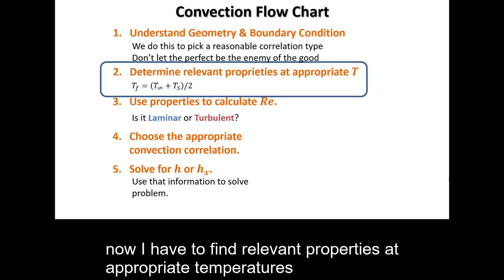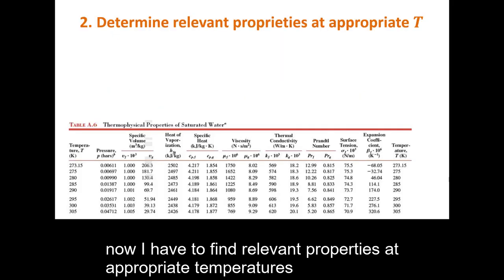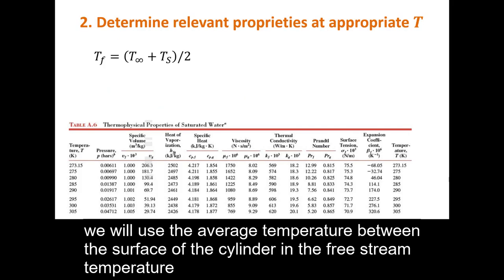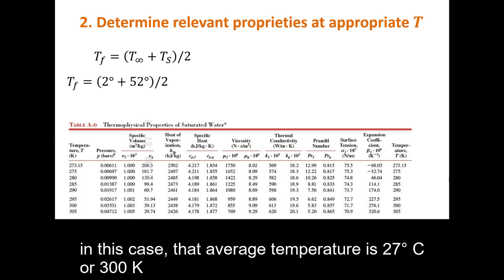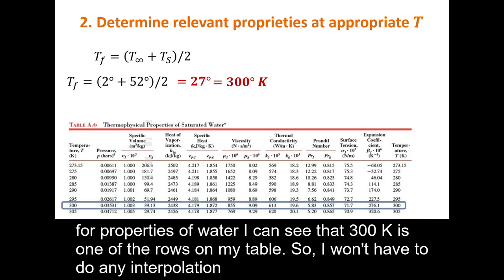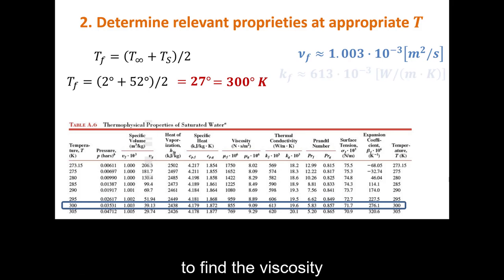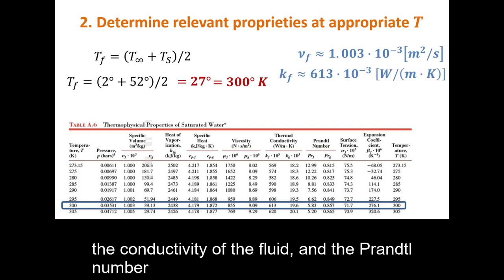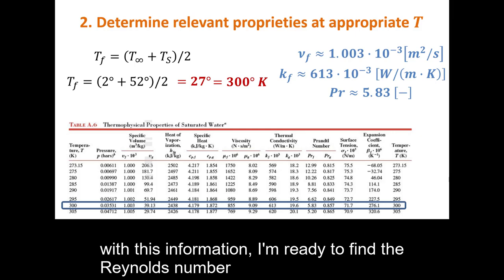Now I have to find relevant properties at appropriate temperatures. We will use the average temperature between the surface of the cylinder and the free stream temperature. In this case, that average temperature is 27 degrees Celsius or 300 Kelvin. Looking at Table A.6 for properties of water, 300 Kelvin is one of the rows on the table, so I won't have to do any interpolation to find the viscosity, the conductivity of the fluid, and the Prandtl number. With this information, I'm ready to find the Reynolds number.